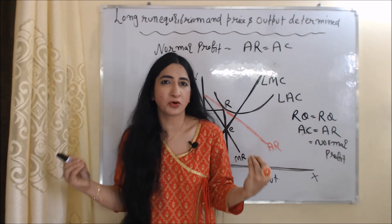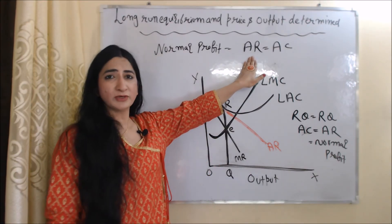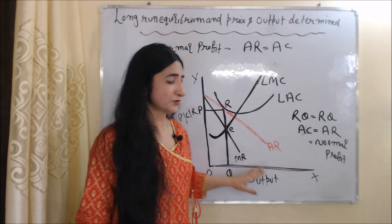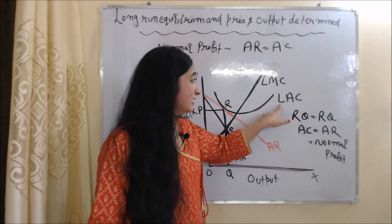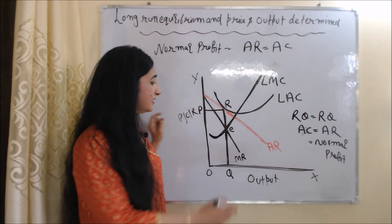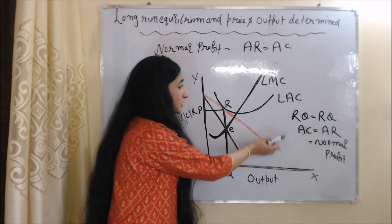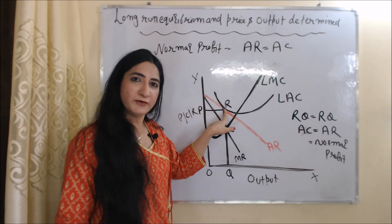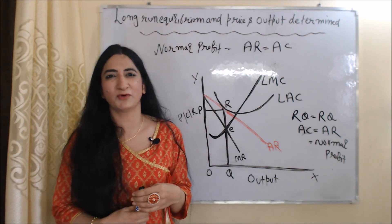In the long run, a firm gets normal profit when AR is equal to AC, or when average revenue is equal to average cost. In this diagram, the X axis shows output and the Y axis shows price, cost, and revenue. MR is the marginal revenue curve, AR is the average revenue curve, LAC is the long run average cost curve, LMC is the long run marginal cost curve, and E is our equilibrium point. RQ is our average revenue and also our average cost, as this R point touches both curves, so average revenue equals average cost — this is our normal profit point. This concludes the topic of short run and long run equilibrium and how price and output are determined under monopolistic competition. Thank you so much for watching. Bye, take care.